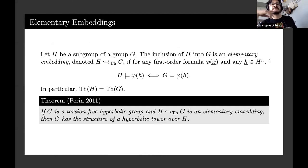In 2011, Perin proved that if G is a torsion-free hyperbolic group and H is elementarily embedded, then G has the structure of a hyperbolic tower over H. Why this is actually important is because what Sela did, which was the really hard part, was the converse: if G is a torsion-free hyperbolic group and G and H are torsion-free hyperbolic groups, and if G is a simple floor over H, then H is elementarily embedded in G, which is a really hard thing and hasn't been proved in more general cases.